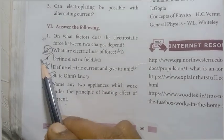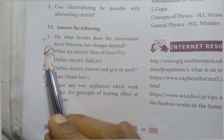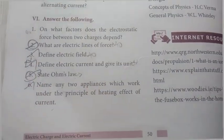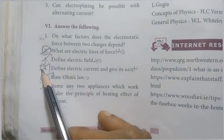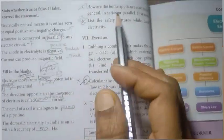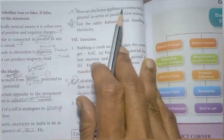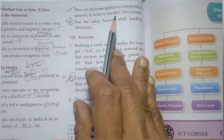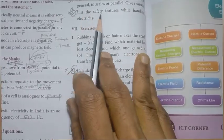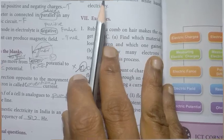Name any two appliances which work under the principle of heating effect of current. Is the tick-panic connected in series or parallel? Give reasons. List the safety features while handling electricity — this is a 5-mark question.